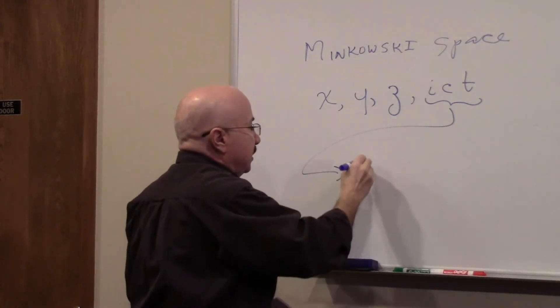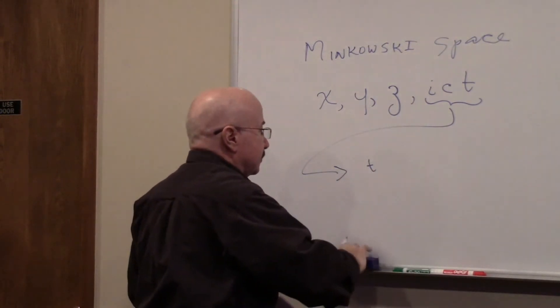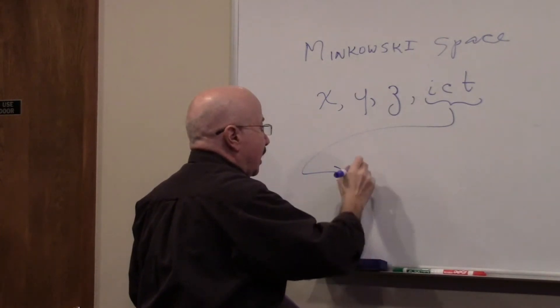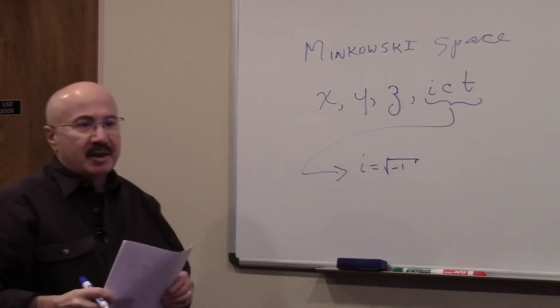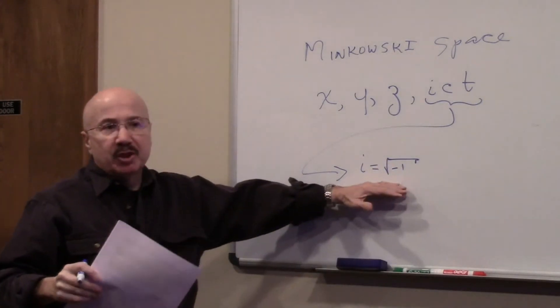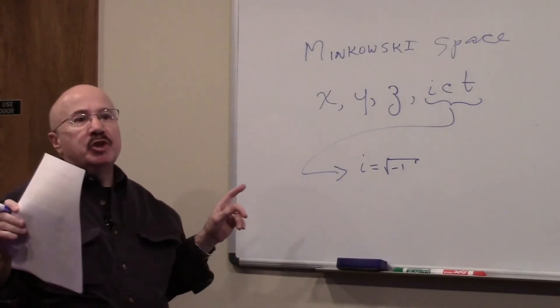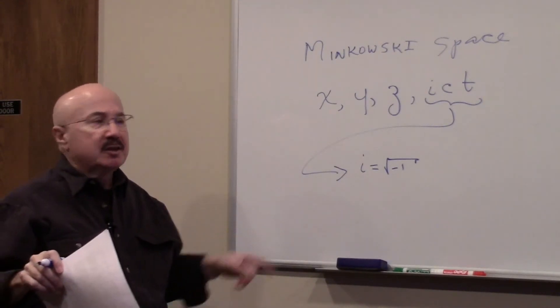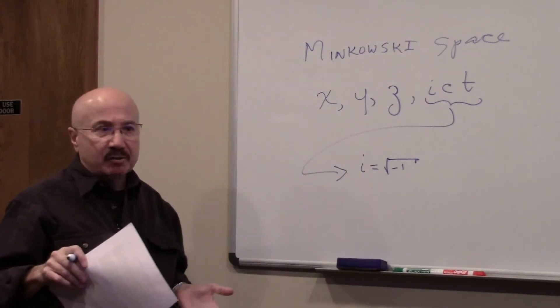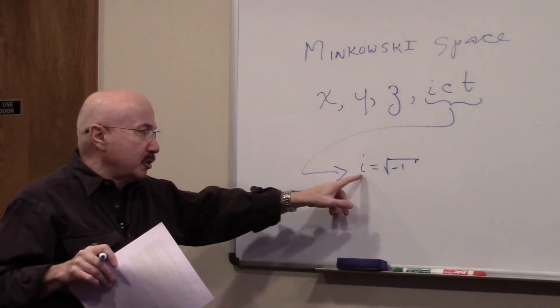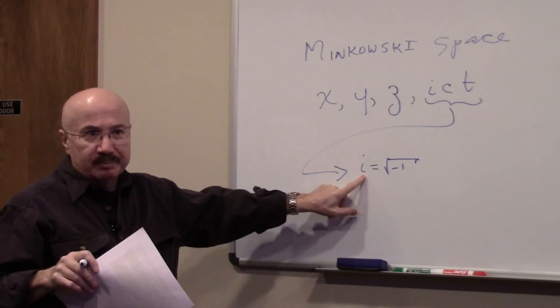First, i is equal to the square root of minus one. Now that's called an imaginary number because although you can express it mathematically, you can't solve it. The square root of minus one is not solvable. So they call it an imaginary number and that's where the i comes from.